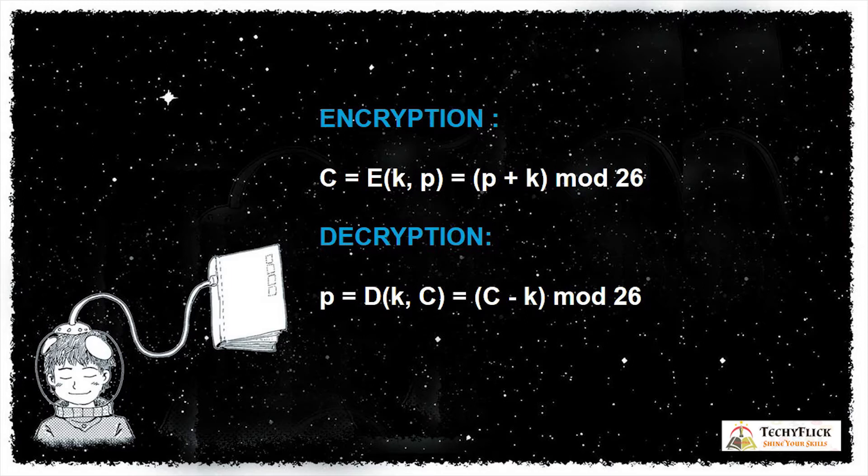For decryption, P stands for plain text. When we convert cipher text to plain text, decryption is D of K and C. D stands for decryption, K for key, and C for cipher text, is equal to C minus K mod 26. We have 26 letters - C minus K, cipher text minus the key.